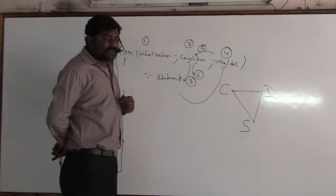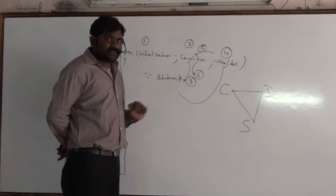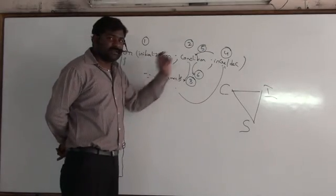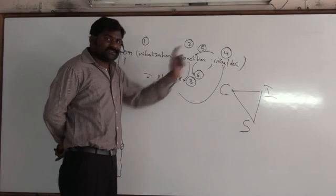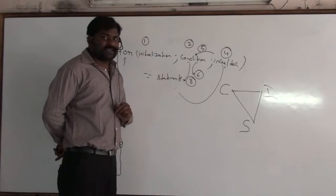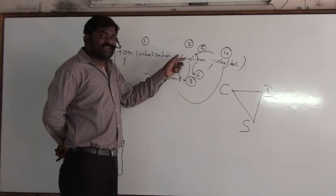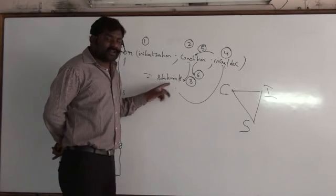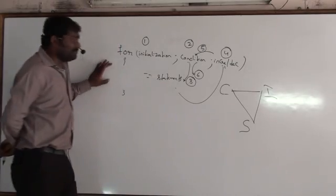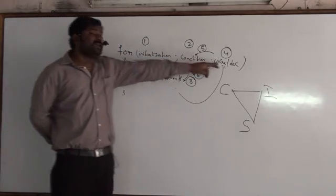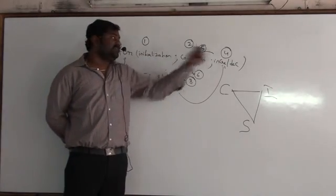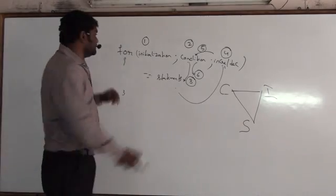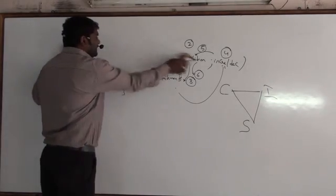Every time what is repeating is the condition, statements, and increment — condition, statements, increment — repeatedly. If the condition is satisfied, it executes the statements you have written inside the block and then increments the value. In this manner, the loop will get executed.